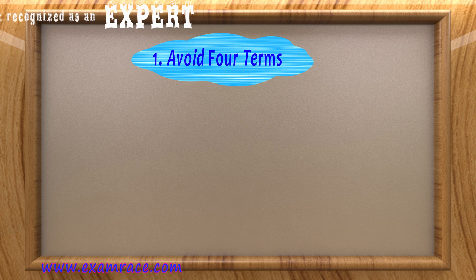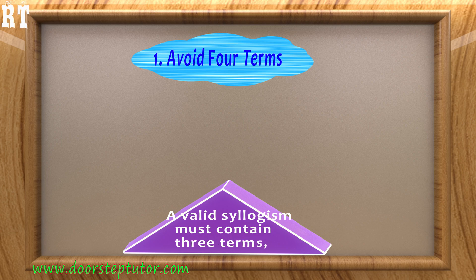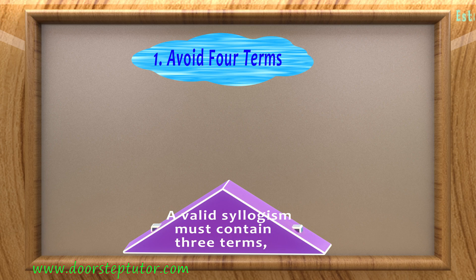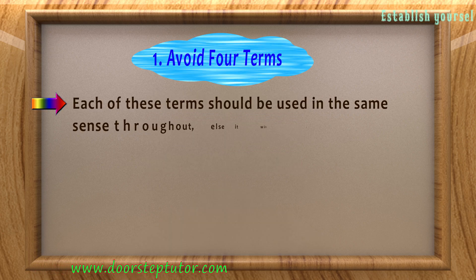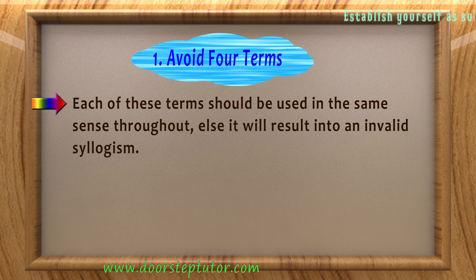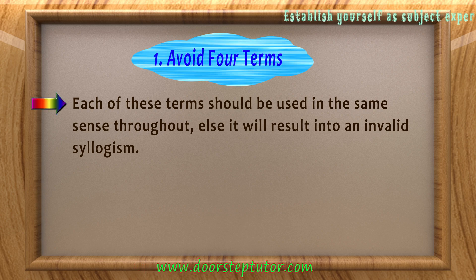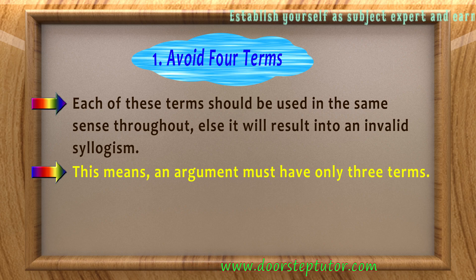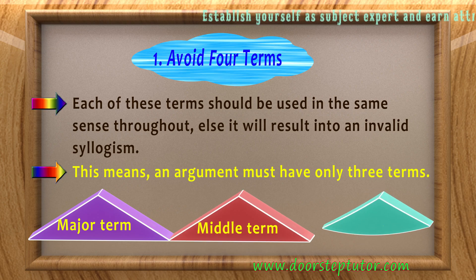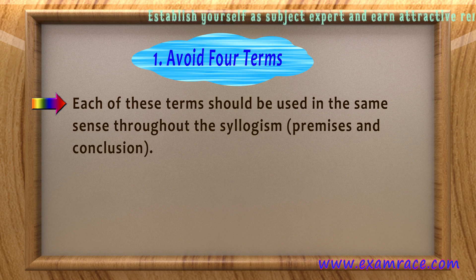In this video, we will study three rules. Rule 1: Avoid four terms in a categorical syllogism. A valid syllogism must contain only three terms — the major term, middle term, and minor term. Each of these three terms should be used in the same sense throughout the syllogism; otherwise, it will result in an invalid syllogism.